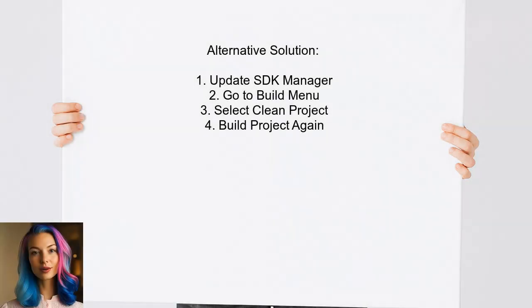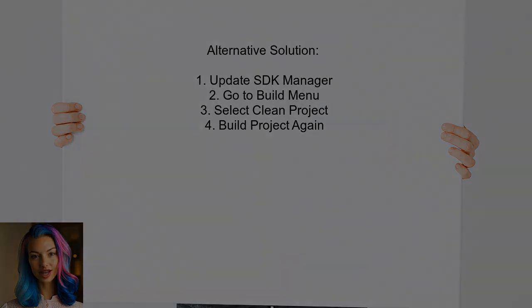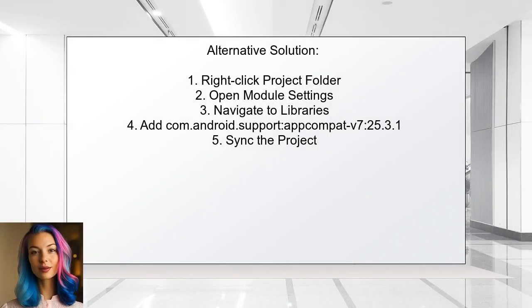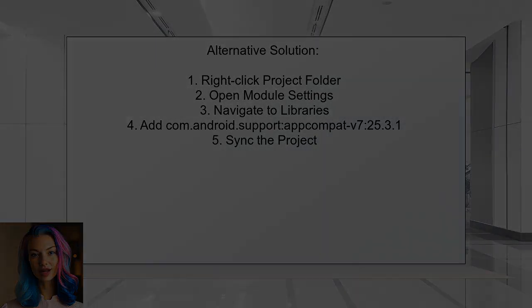One alternative solution is to update your SDK manager. Start by going to the Build menu, then select Clean Project, and finally build the project again. Another option is to right-click on your project folder, open Module Settings, navigate to Libraries, and add com.android.support AppCompat v7 25.3.1. Don't forget to sync the project afterward.